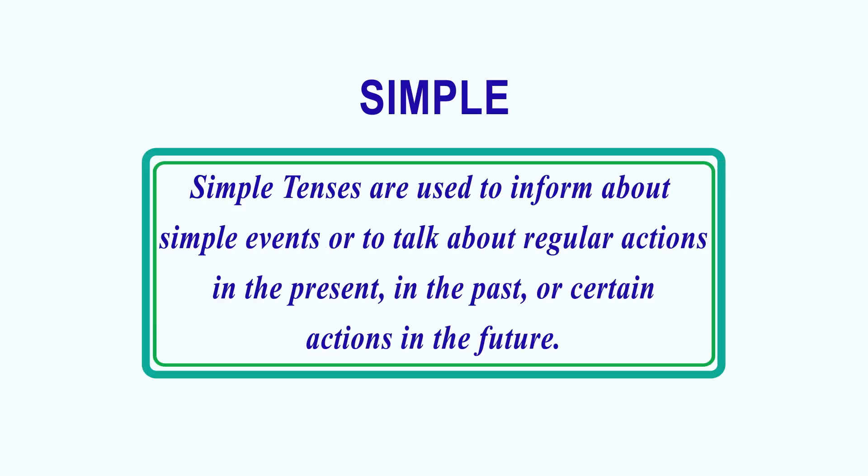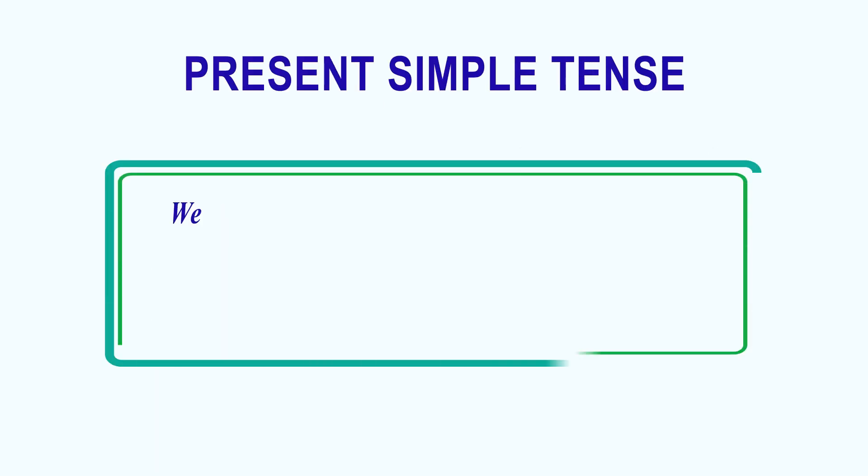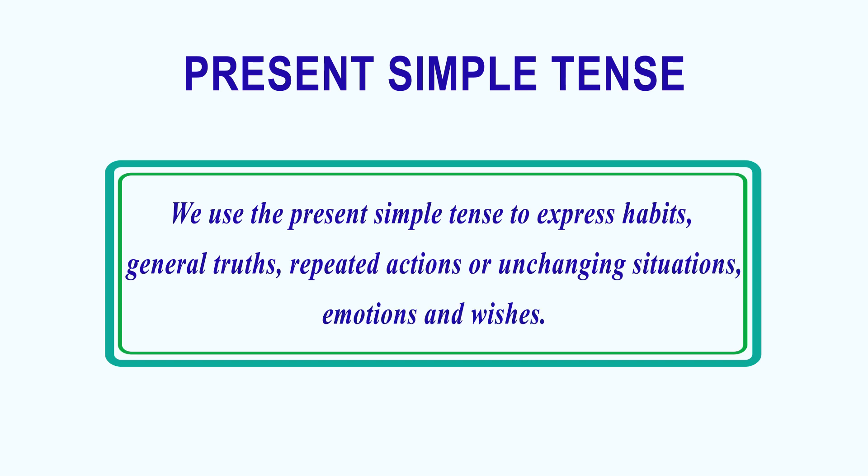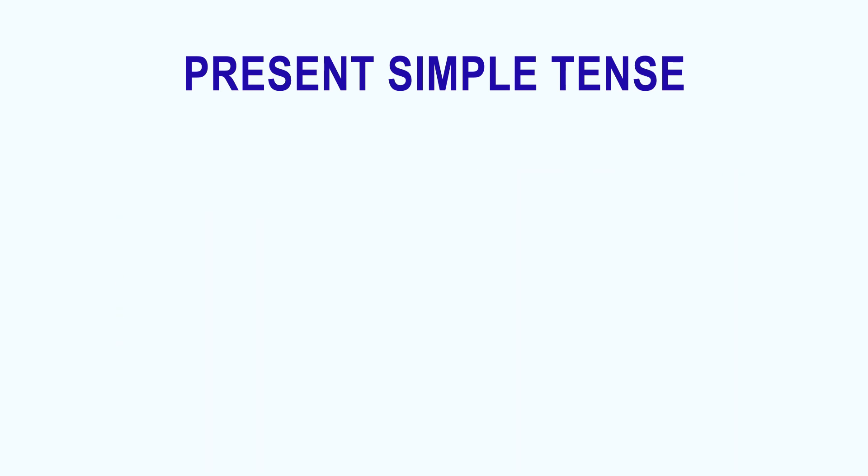Let's start with simple tenses. We use the present simple tense to express habits, general truths, repeated actions or unchanging situations, emotions and wishes. When you see or think about the following adverbs of frequency, it is a signal of the present simple tense.